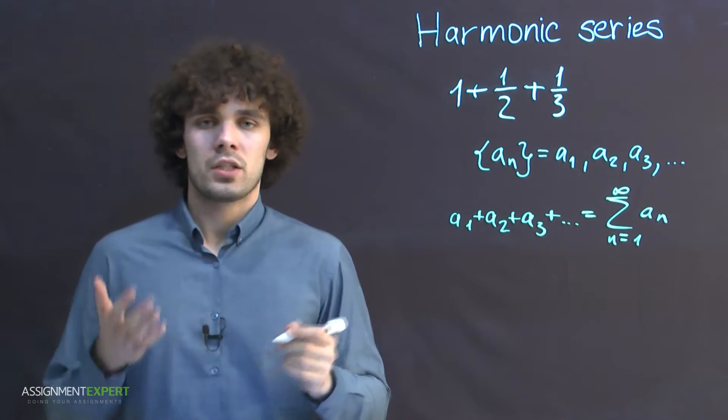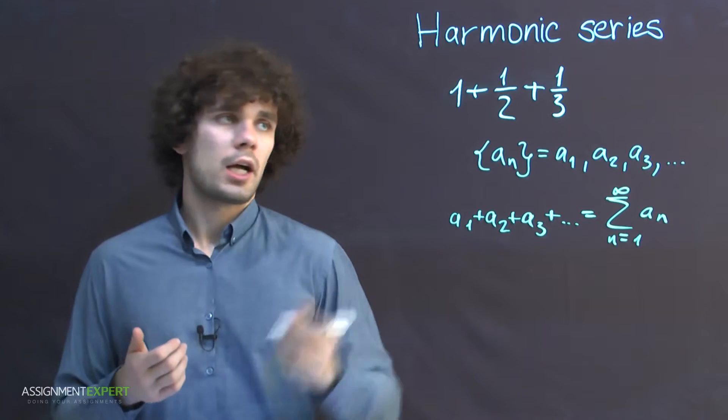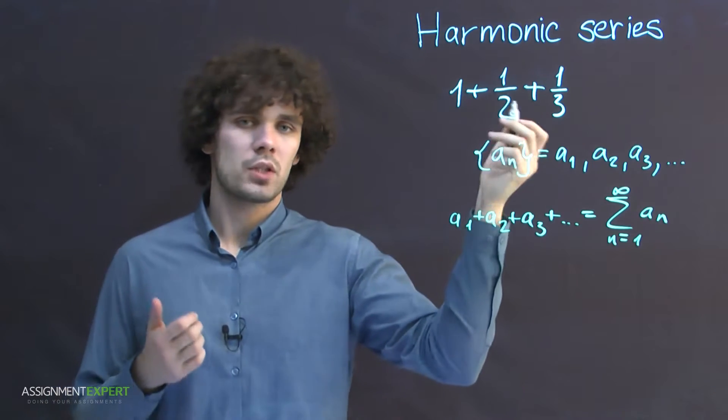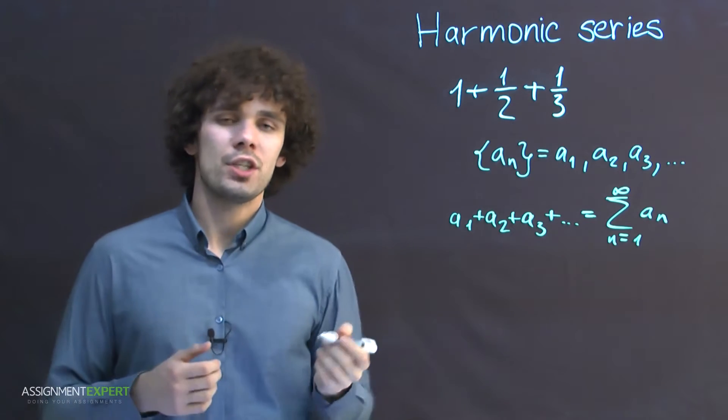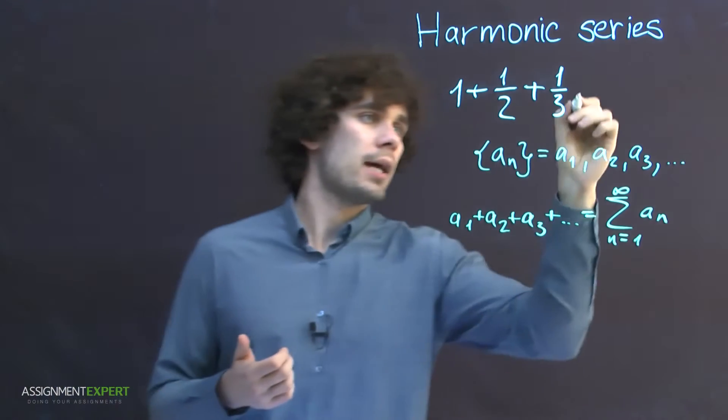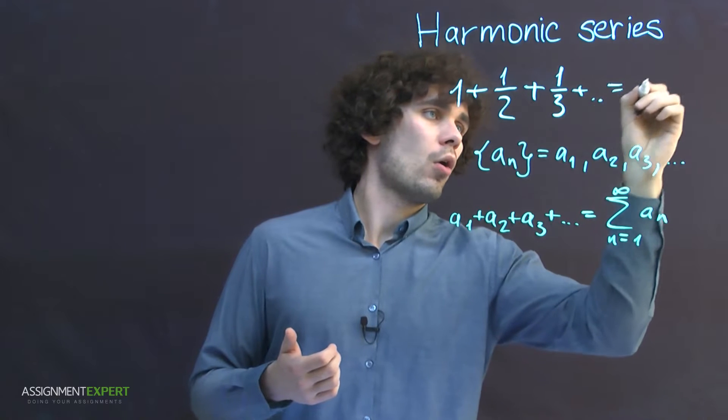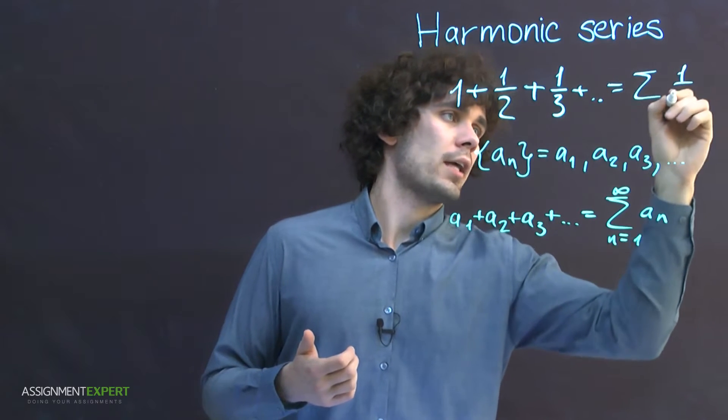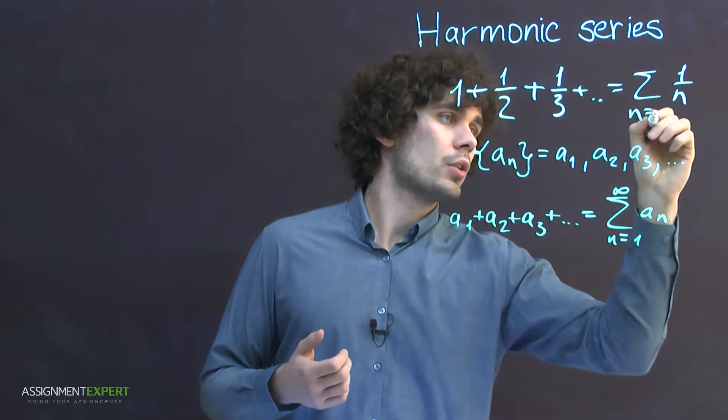The famous example is a harmonic series, which goes like 1 plus 1/2 plus 1/3. So this is very similar to the situation in the bar. We can also write this more compactly as the sum of 1/n for n from 1 to infinity.